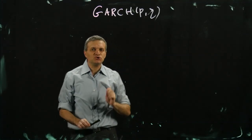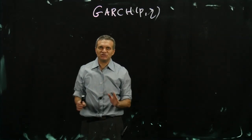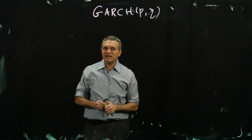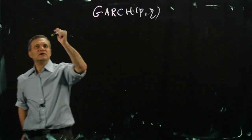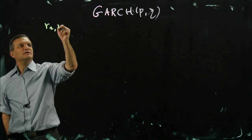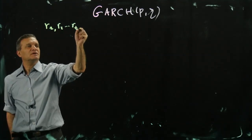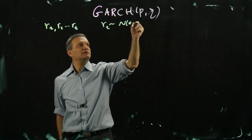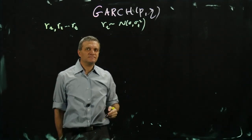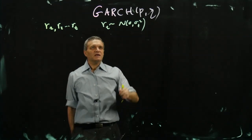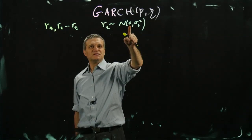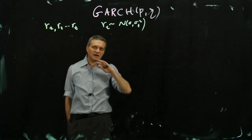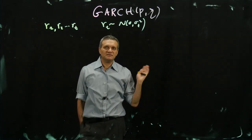I'm going to show you that GARCH is actually a very natural extension of what we're always doing. Say we have returns r1, r2, ..., rT, where rT is normally distributed and this is a stationary process.